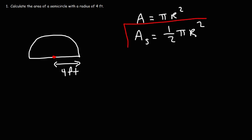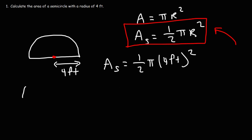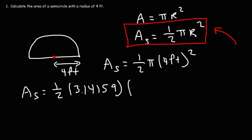Once you have the radius, all you need to do is plug it into this formula. So it's going to be one half π times 4 feet squared. For π, I'm going to use the value 3.14159. Four squared is 16, so it's going to be 16 times 3.14159 times 0.5. The area of the semicircle in this example is 25.13.